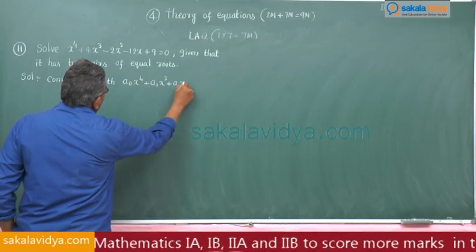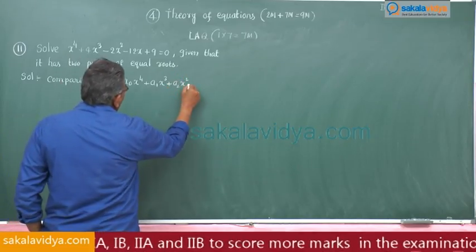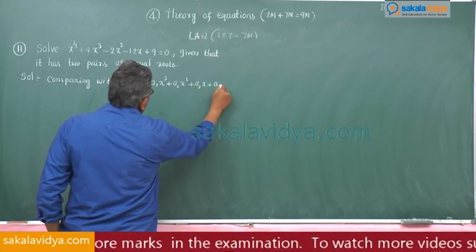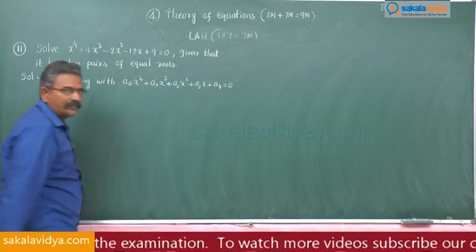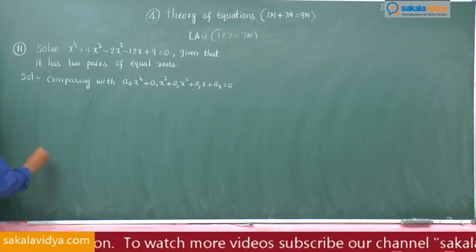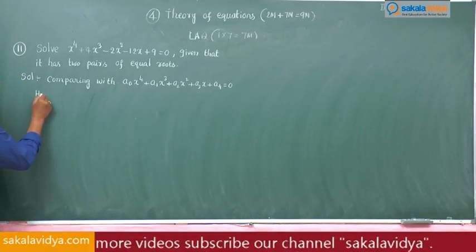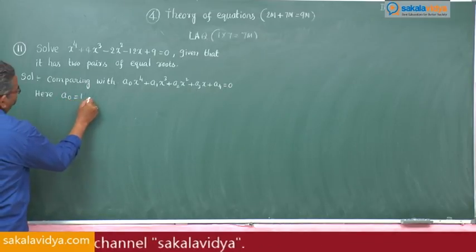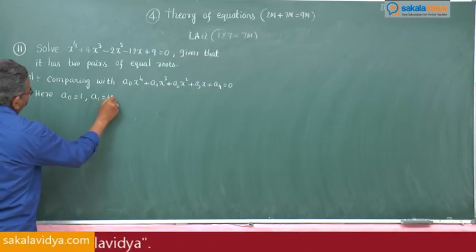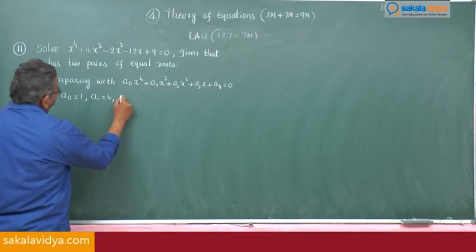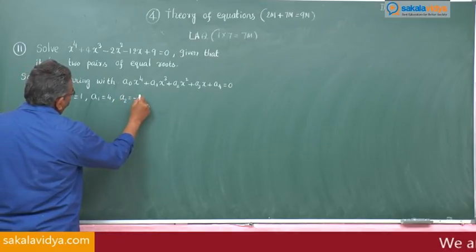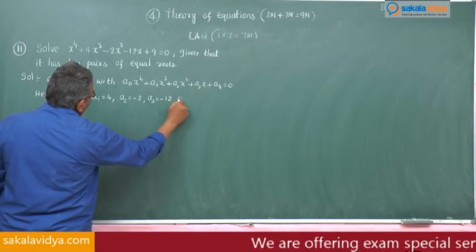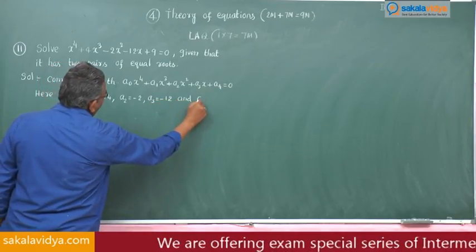The general form is a0x⁴ plus a1x³ plus a2x² plus a3x plus a4 equals 0. Here a0 is equal to 1, a1 is equal to 4, a2 is equal to minus 2, a3 is equal to minus 12, and a4 is equal to 9.